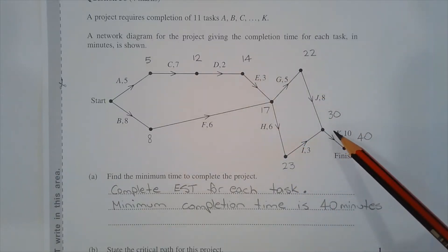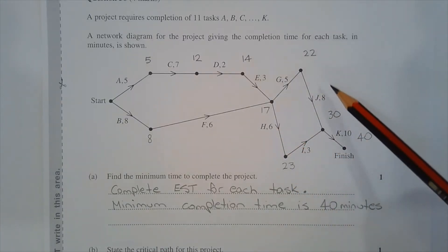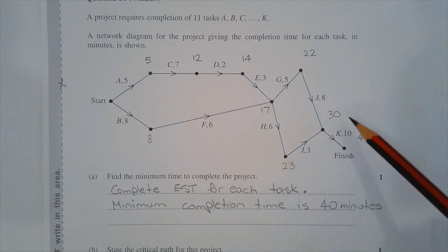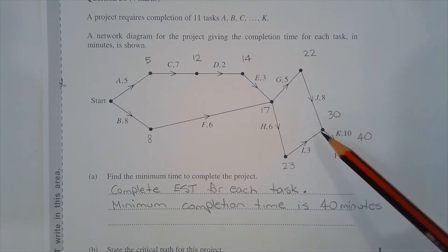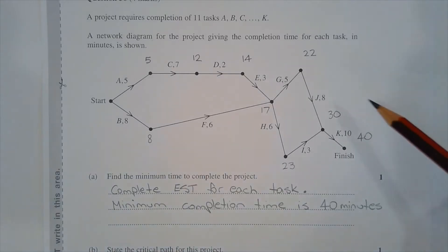Again there are two ways to get to this vertex. Either 22 plus 8 which is 30, or 23 plus 3 which is 26. We write the higher of the two numbers which is 30. 30 plus 10 equals 40 and we're at the finish. So the minimum completion time is 40 minutes.